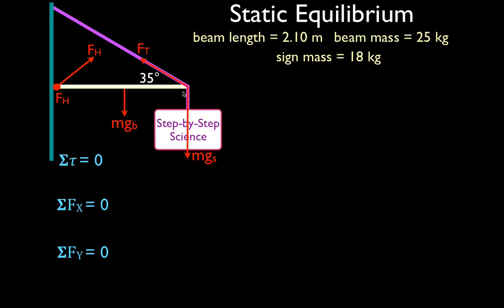So FTX is the x component of the tension, FTY is the y component. We also have the x and y components of the hinge force, FHX and FHY. We've drawn in all the forces and broke the tension and hinge force into their x and y components. What we're really trying to solve for are these four components — FTY, FTX, FHX, and FHY — and then use the Pythagorean theorem and trig to find the actual tension and hinge forces.